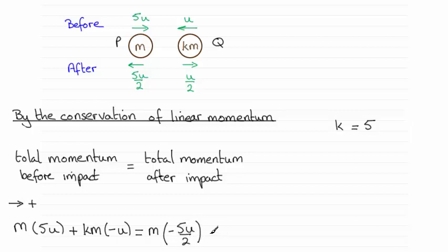And then we add the momentum of q. So the mass is km. And we multiply that by its velocity. Speed is u over 2 to the right, so its velocity will be positive u over 2.